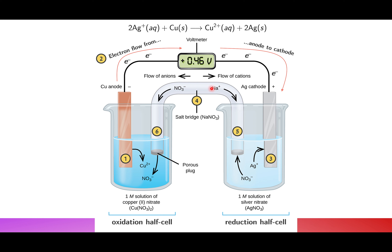The salt bridge usually contains a solution of an alkali metal nitrate or alkali metal chloride — chlorides and nitrates are highly soluble. The negative ion moves toward the oxidation half-cell, and the positive ion moves toward the reduction half-cell. This allows charge to flow while keeping both solutions electrically neutral, which is the purpose of the salt bridge — allowing charge to flow without mixing solutions so that current can continue.